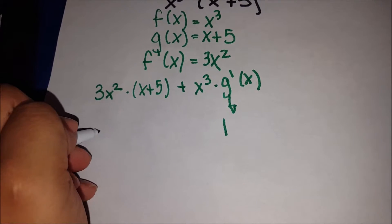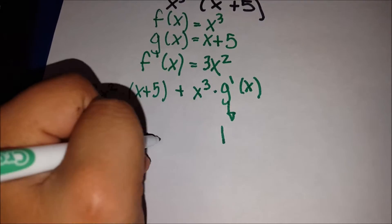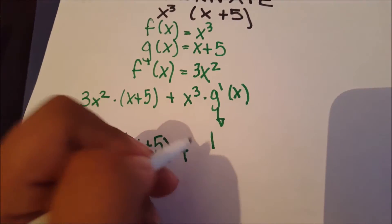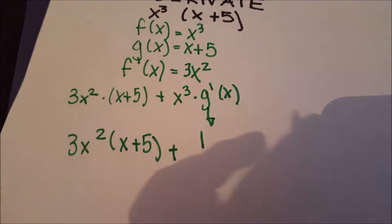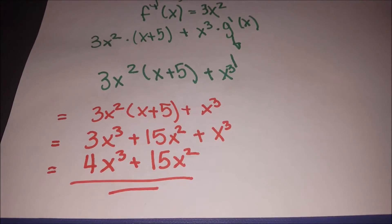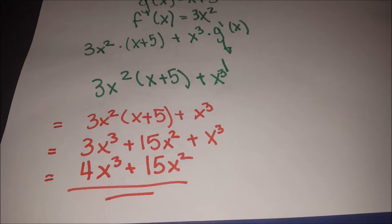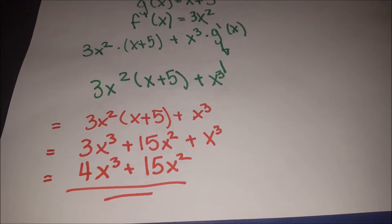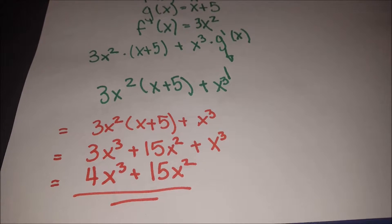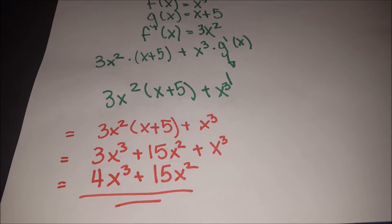So our expression becomes 3x squared multiplied by x plus 5, plus x cubed times 1, which is just x cubed. Multiplying out gives 3x cubed plus 15x squared plus x cubed. Combining like terms, we get 4x cubed plus 15x squared.